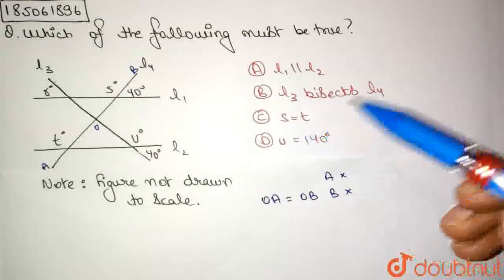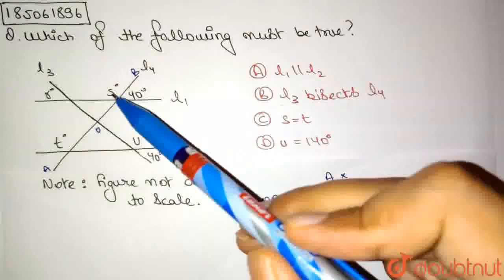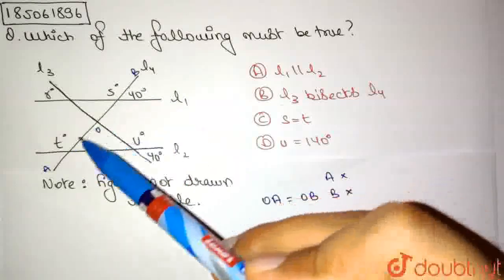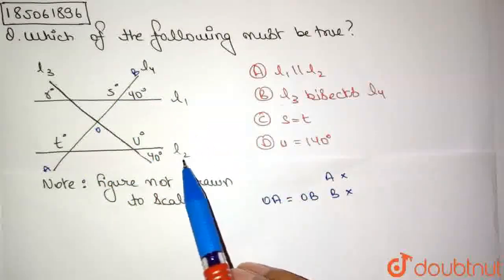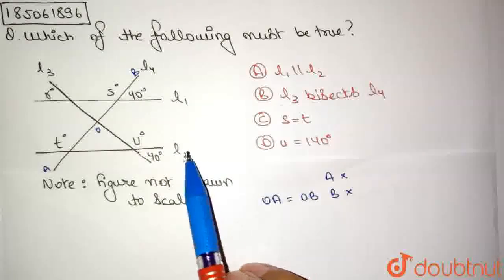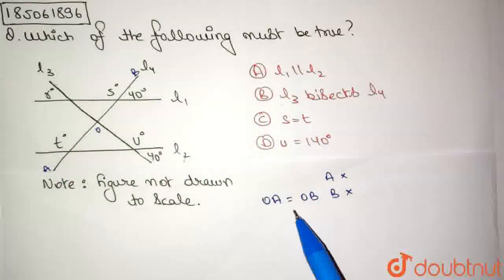Option C is S equals T. S is over here, T is over here. We could have compared both of these angles had L1 and L2 been parallel. But since L1 and L2 are not parallel to each other, we cannot draw any relation between T and S. T and S may or may not be equal depending on whether L1 and L2 are parallel. It is a conditional statement, so we cannot say that C is correct. C must be false.